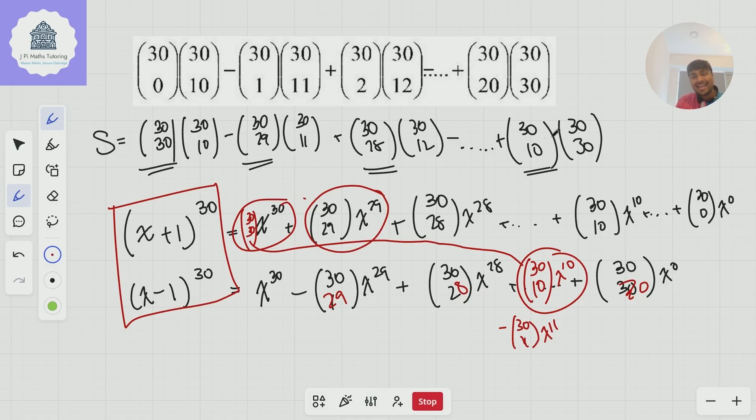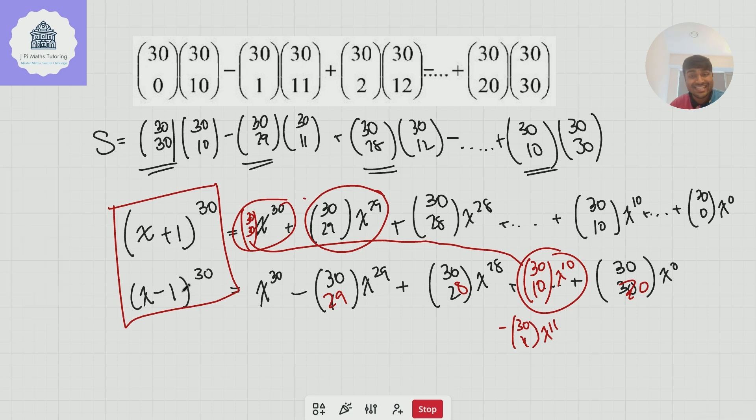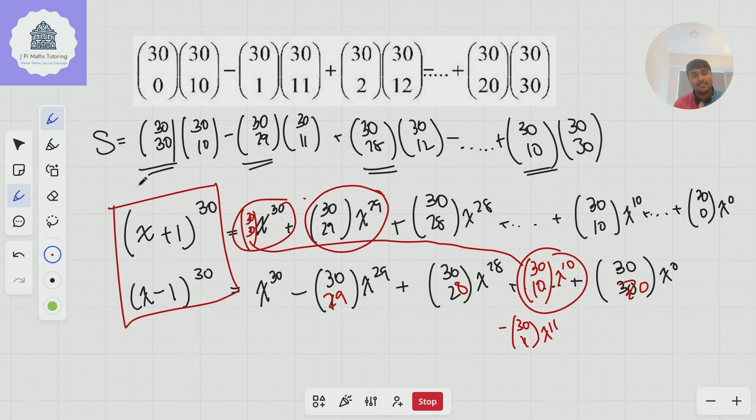So let me just reiterate, this s is just some number. And at the end of the day, if I multiplied x plus 1 to the 30 by x minus 1 to the 30 together, I get a huge polynomial of degree 60. The coefficient of x to the 40 is going to be s. So that's all I need to work out, the coefficient of x to the 40 in this. And conveniently, if I multiply these together, I get x squared minus 1 to the 30. And if I look for the coefficient of x to the 40 here, or because it's x squared, that's going to be x squared to the power of 20.